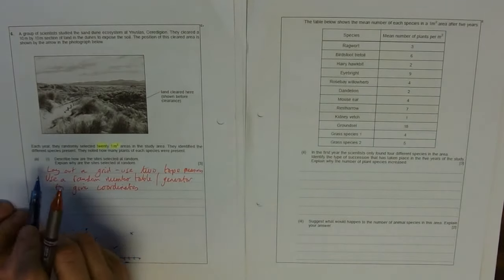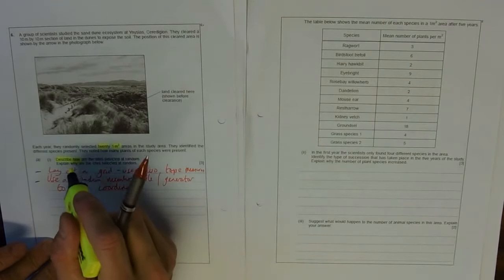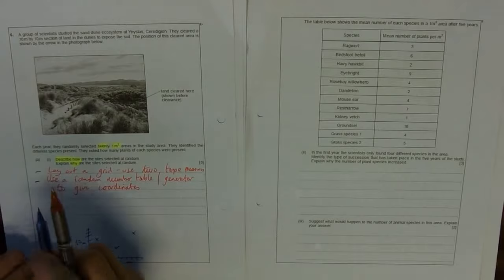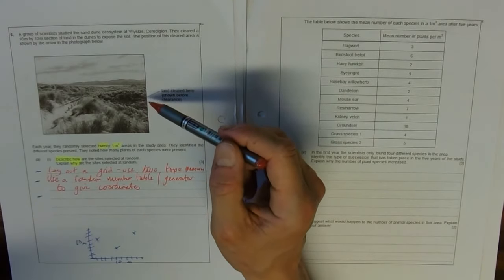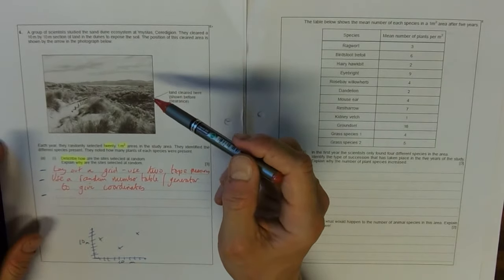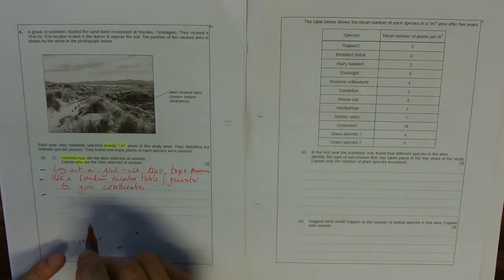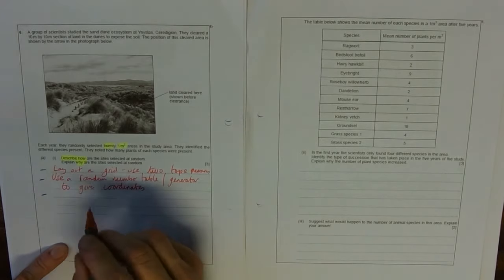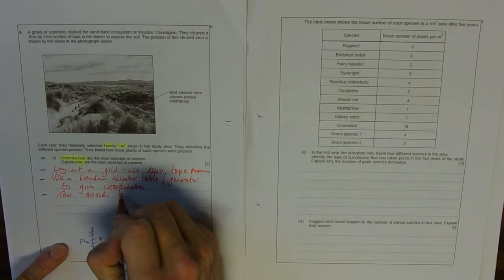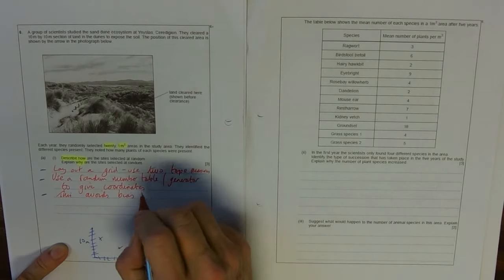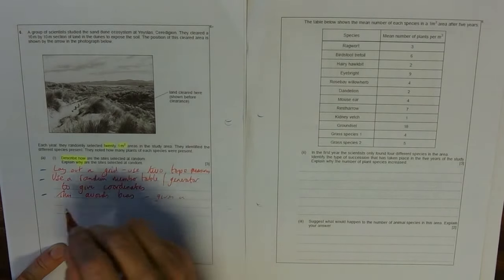But we've got three marks, so we've, and the last one will be explain why. So we've got our first describing how for two marks and then we've got a why question. So why would we do it at random? Because even scientists would be biased. They'd pick the most interesting area to put their quadrats on. Or if they found a new plant, they definitely want that to be included. So they'd be biased. So this random generation of numbers avoids bias. Or you could say, gives a better representation.